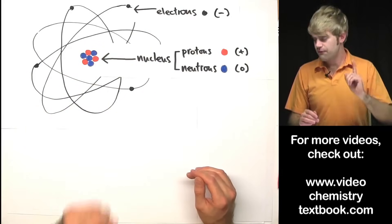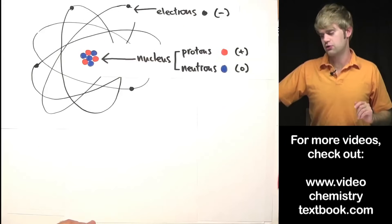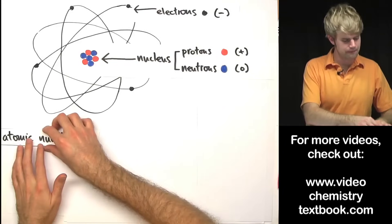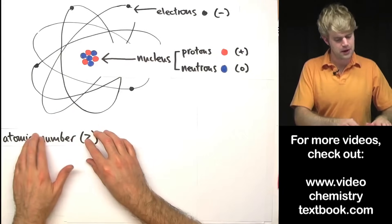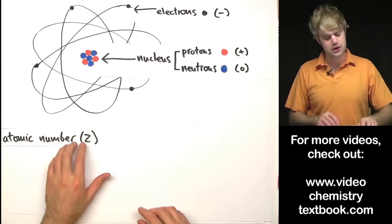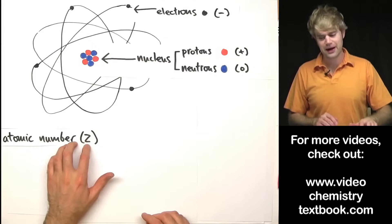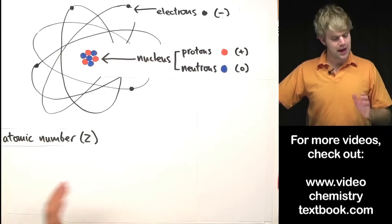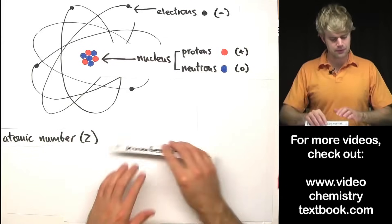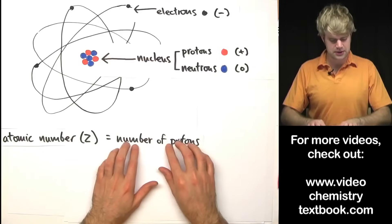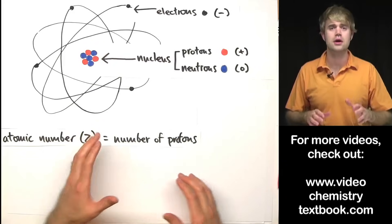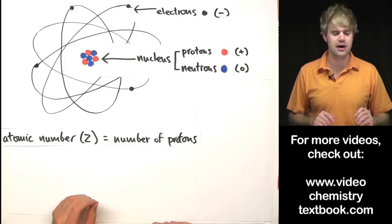The first of these characteristics, and maybe the most important, is the atomic number. Atomic number is often abbreviated by a capital letter Z. And what the atomic number is, is it's the number of protons in the nucleus of an atom.